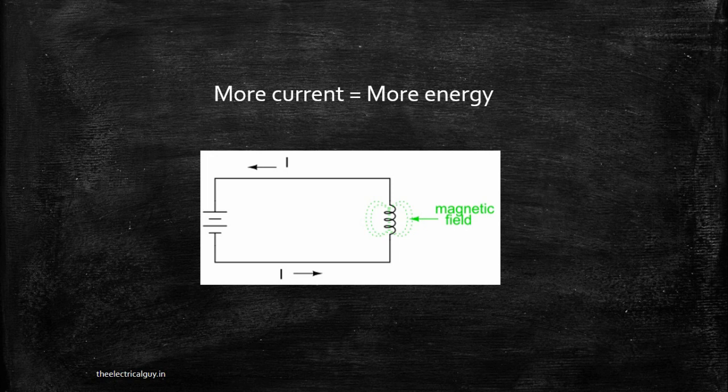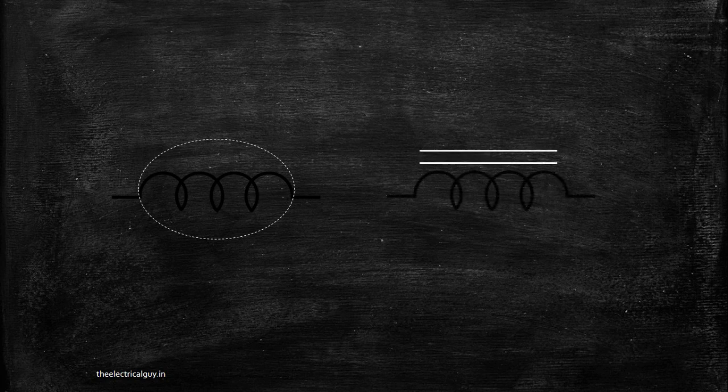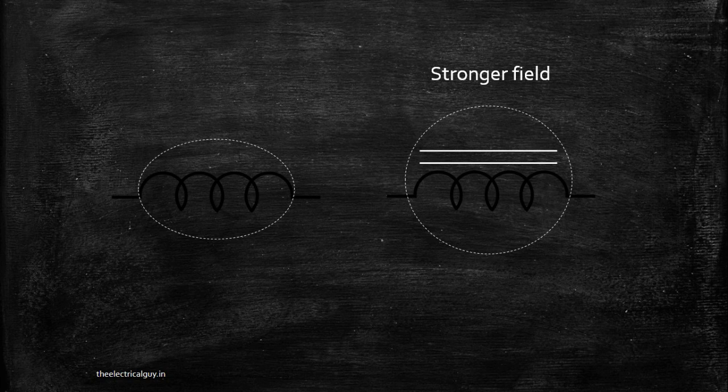There is one more way to strengthen your magnetic field. We have a coil that creates a magnetic field, but if I want more magnetic field with this same coil, I simply insert an iron core or ferromagnetic material into the coil, or wind the coil on the ferromagnetic material. This ferromagnetic material strengthens the magnetic field. You get a stronger magnetic field with the same amount of current. This is the reason most inductors are wound on ferromagnetic material like soft iron.